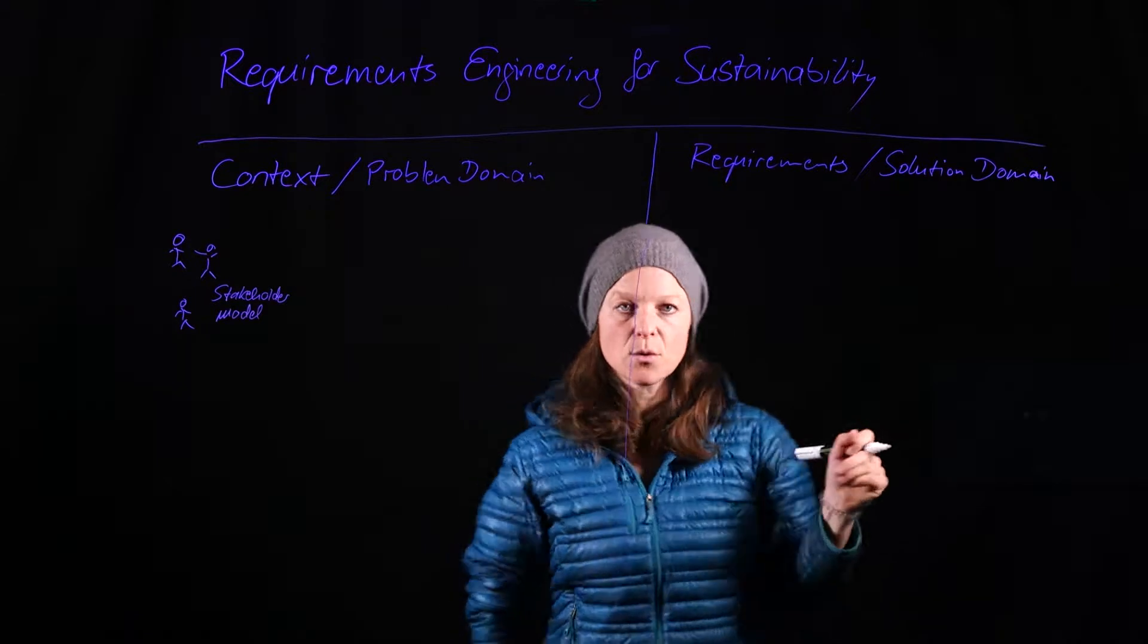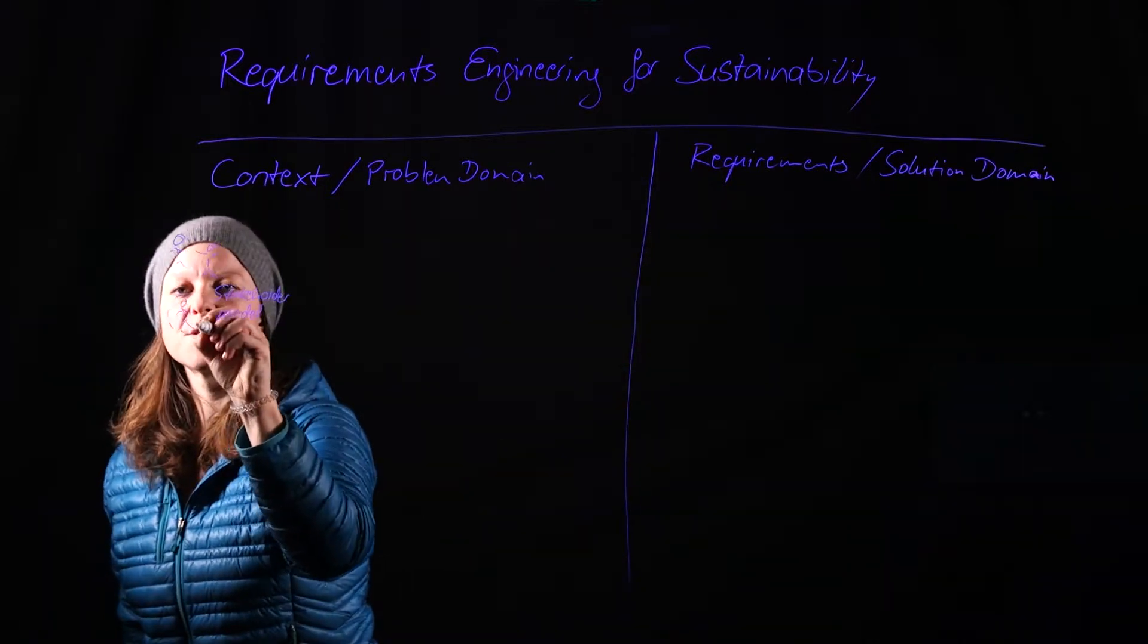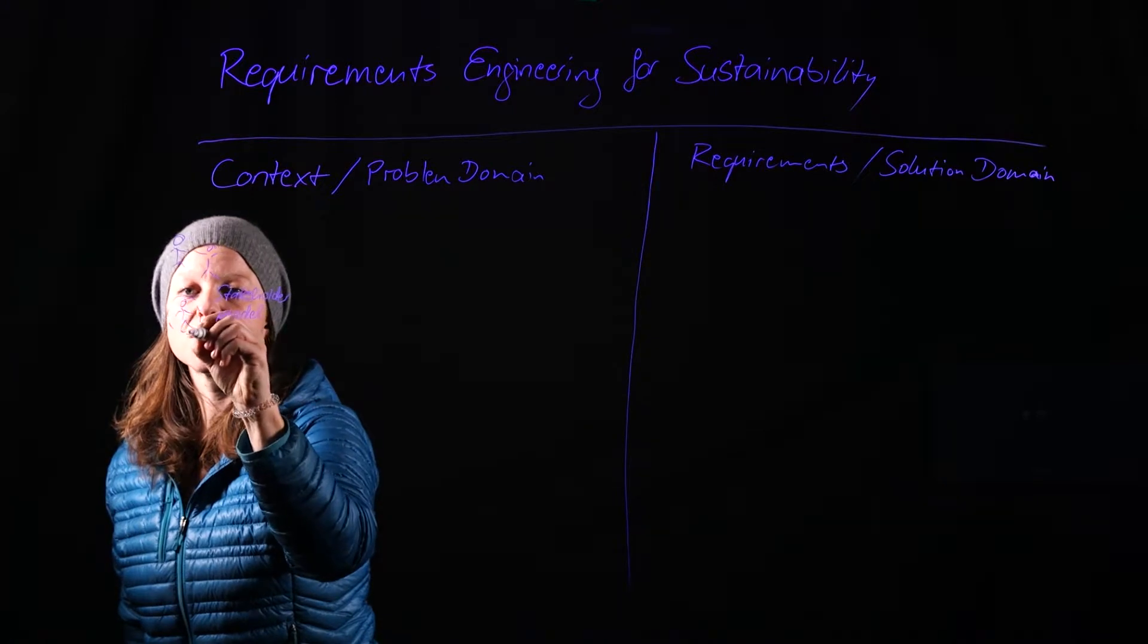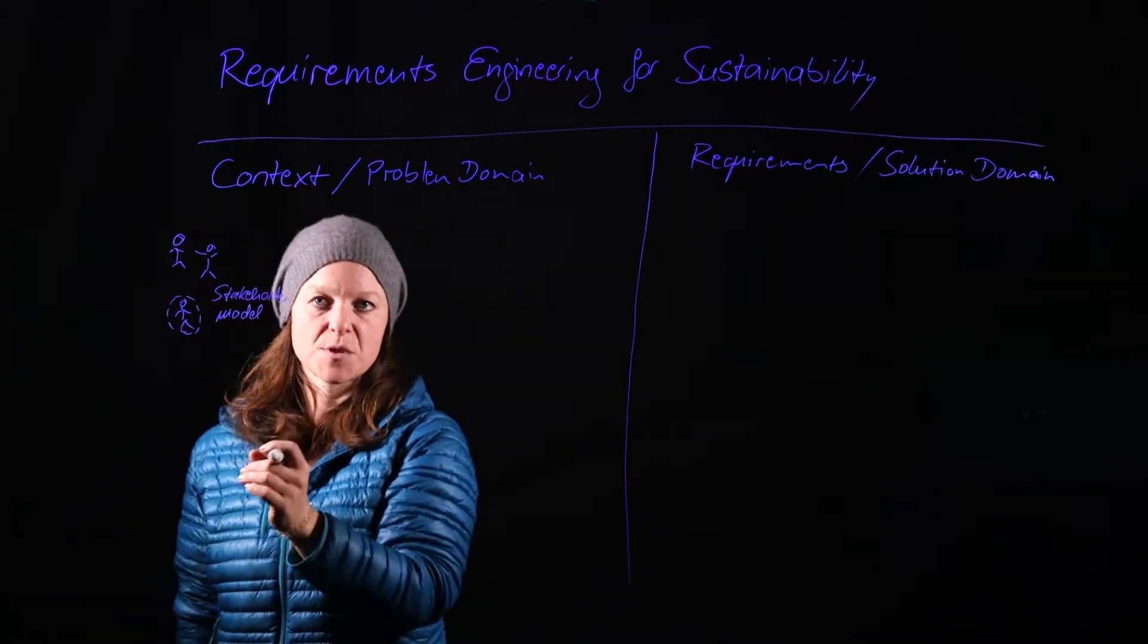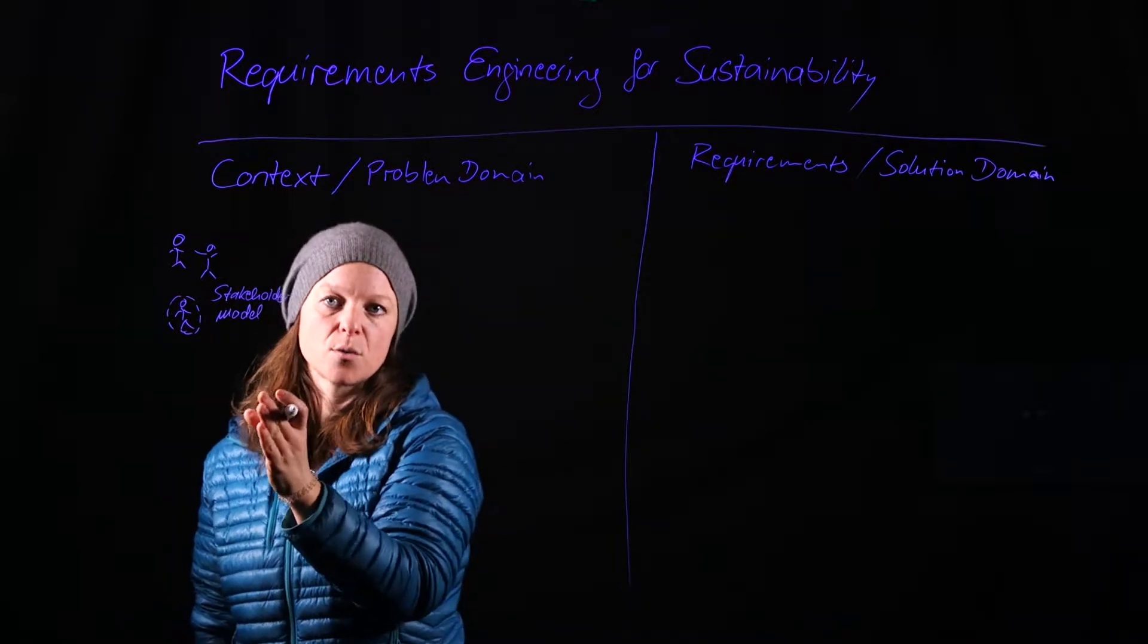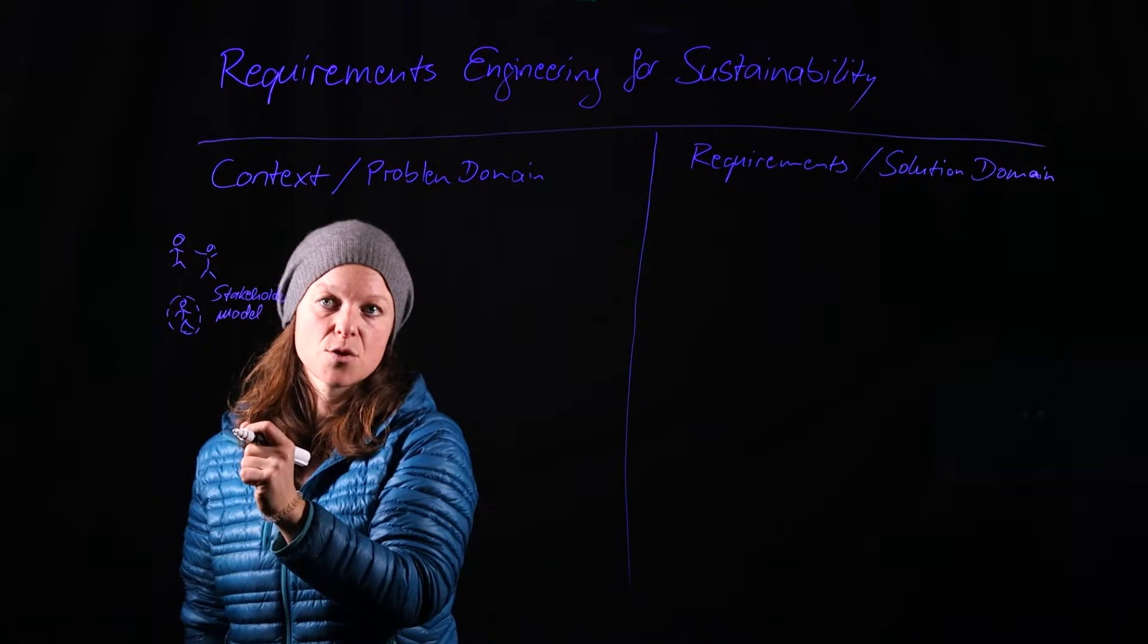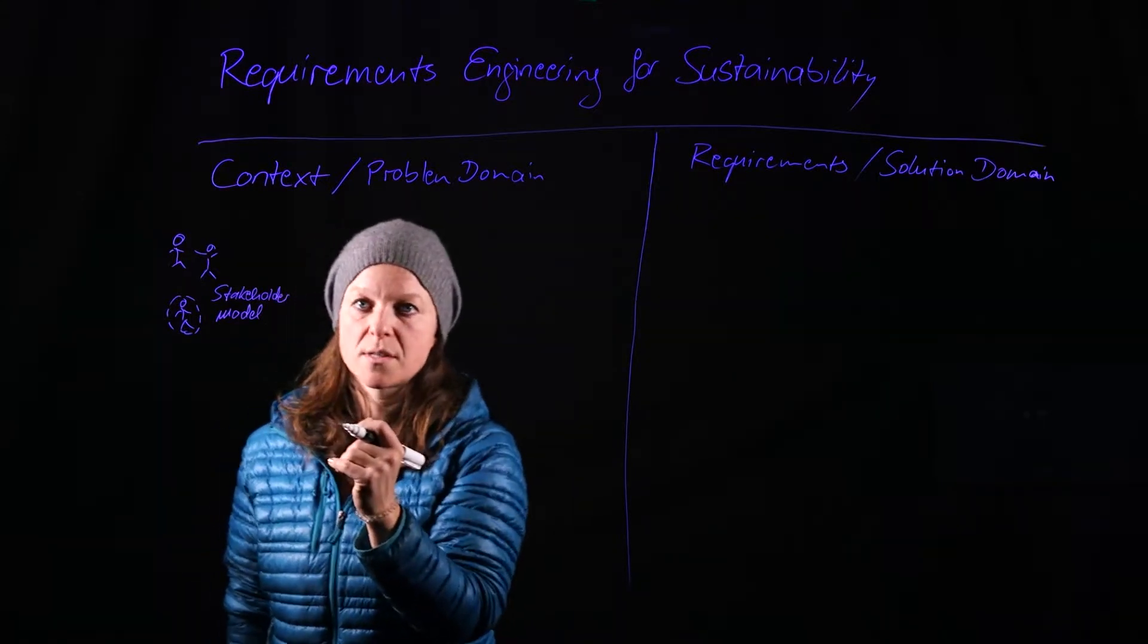That stakeholder model should definitely have at least one representative who is an advocate for sustainability for this specific system. So make sure you find a stakeholder who can represent that. If you cannot find one of those in the organization, then that organization has some work to do.